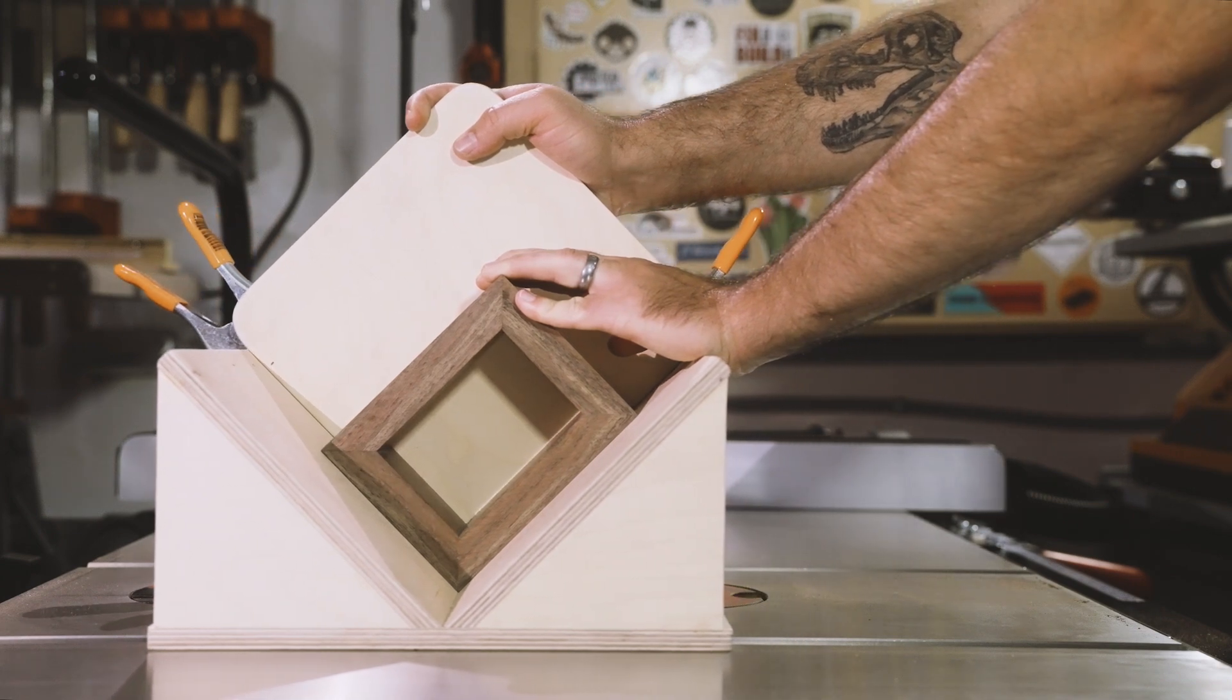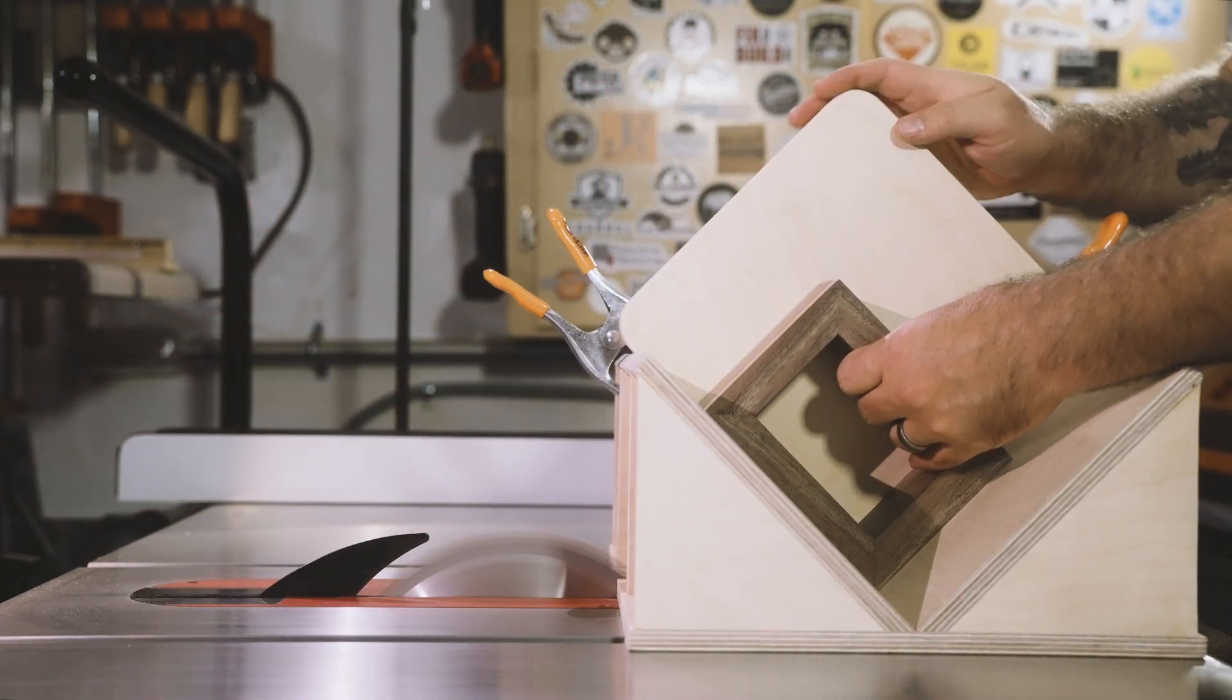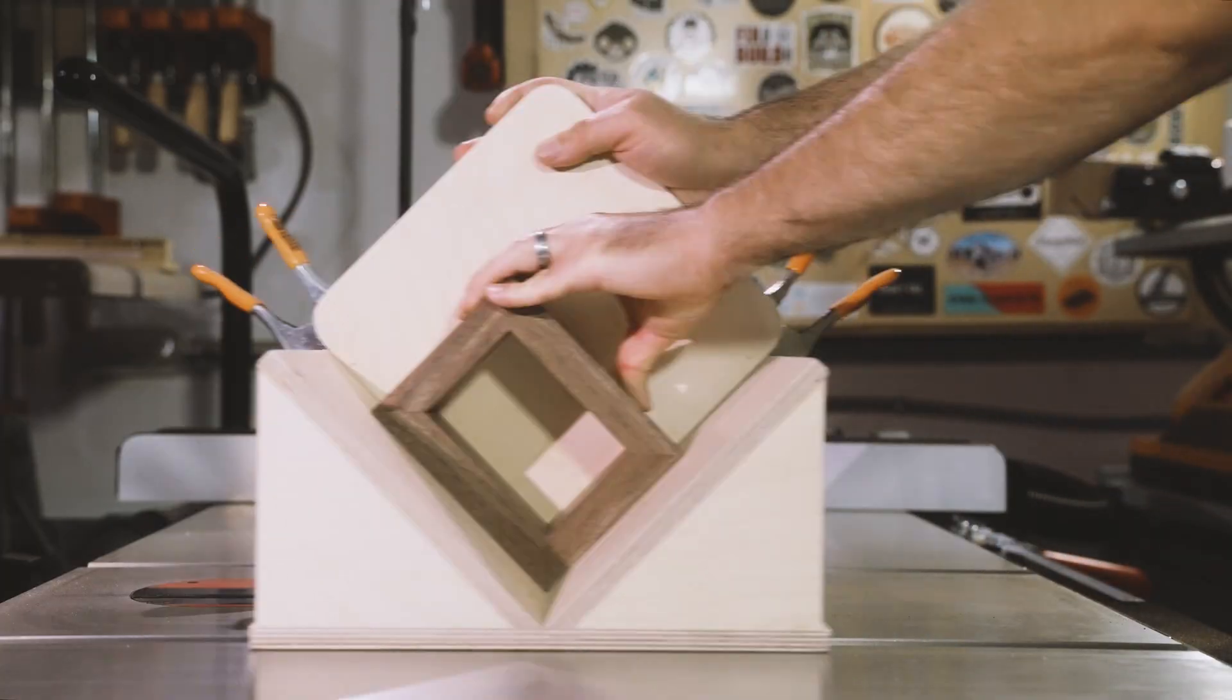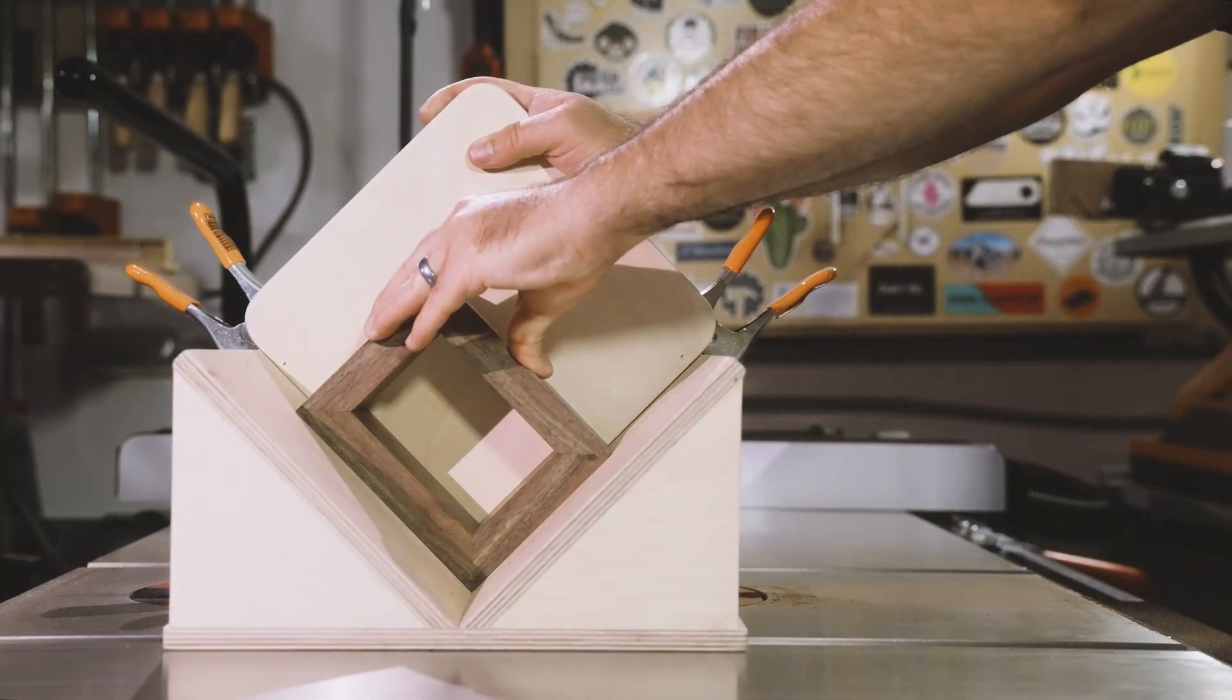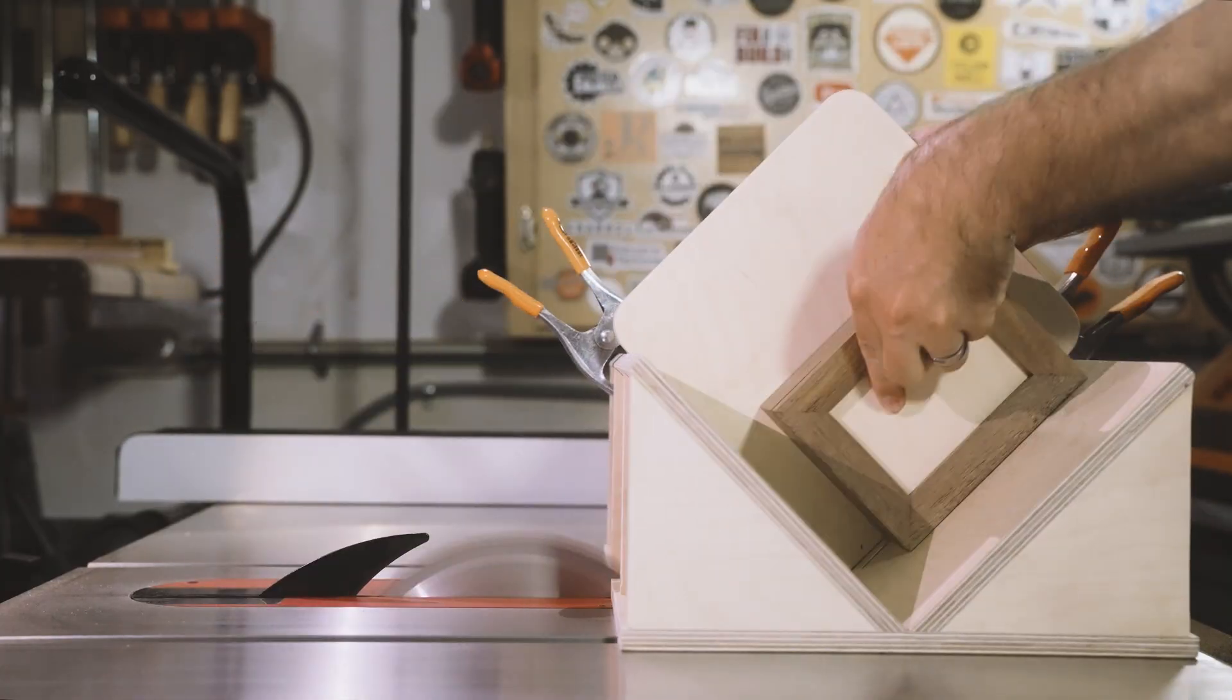And we can make our first cut. Turn the box and do the same thing on all four corners, and then flip it over to get evenly spaced keys near the top of the box as well.